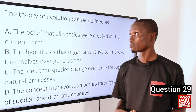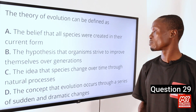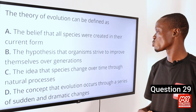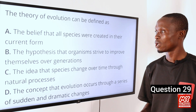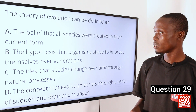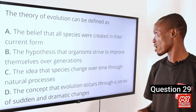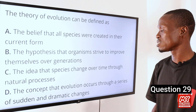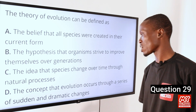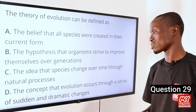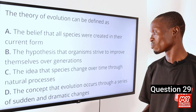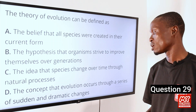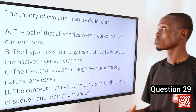Question 29. The theory of evolution can be defined as: A. The belief that all species were created in their current form. B. The hypothesis that organisms strive to improve themselves over generations. C. The idea that organisms change over time through natural processes. D. The concept that evolution occurs through a series of sudden and dramatic changes.